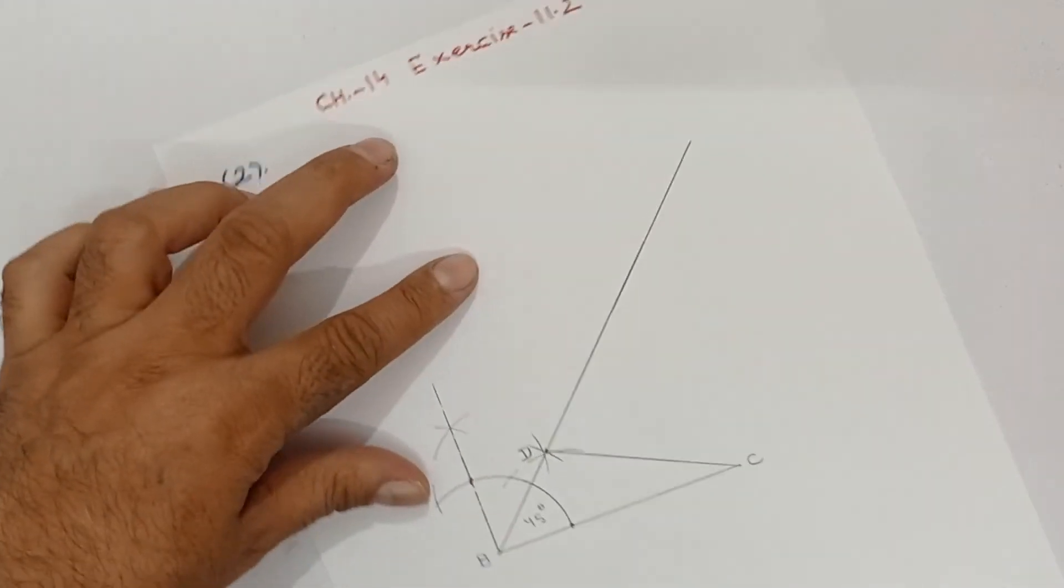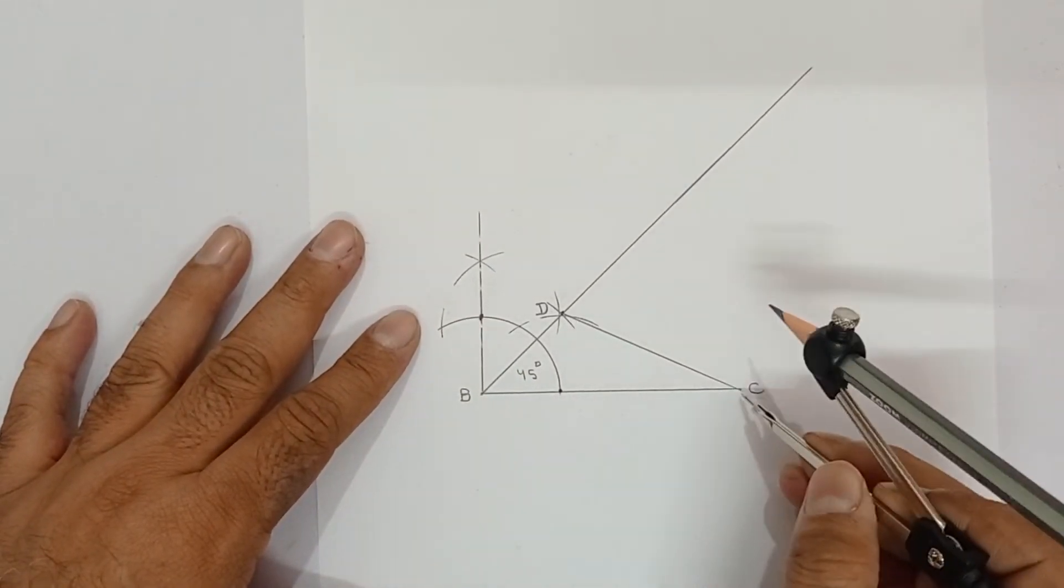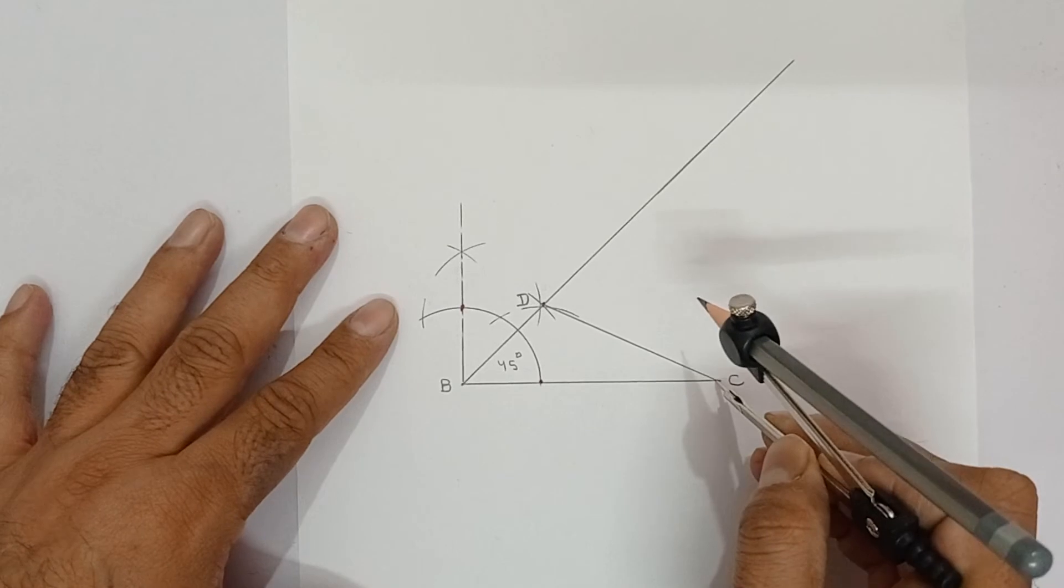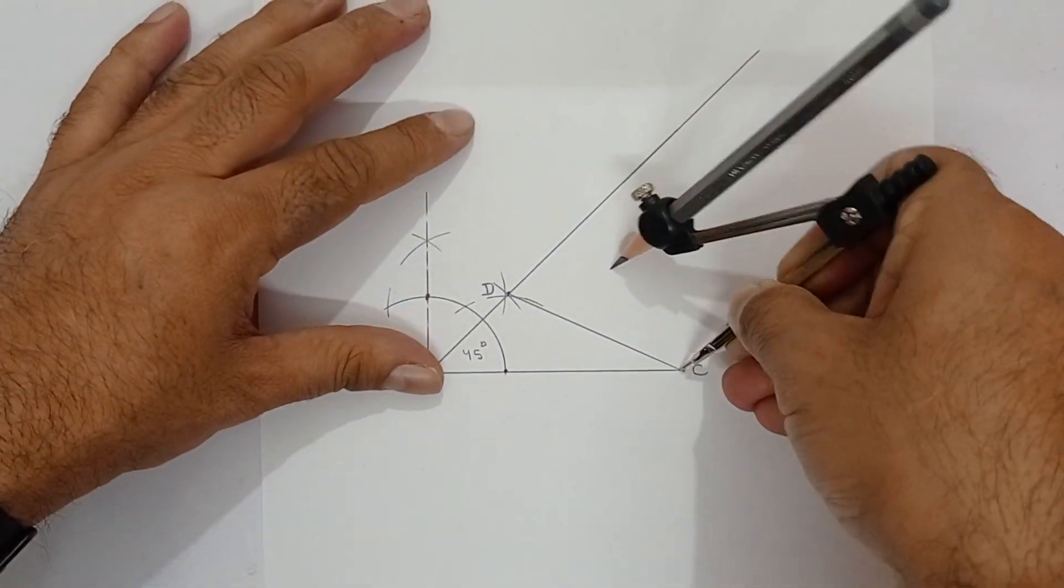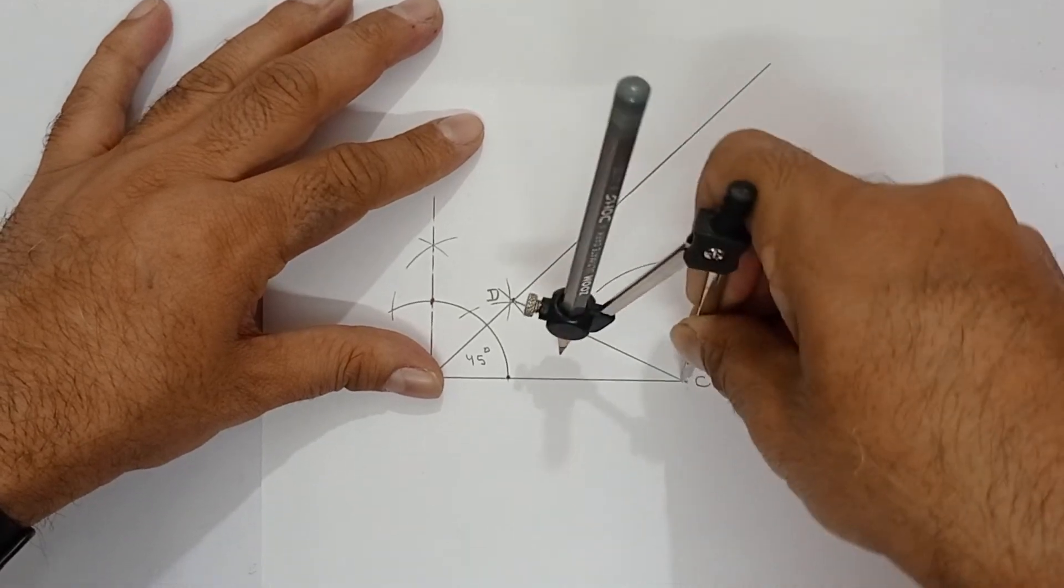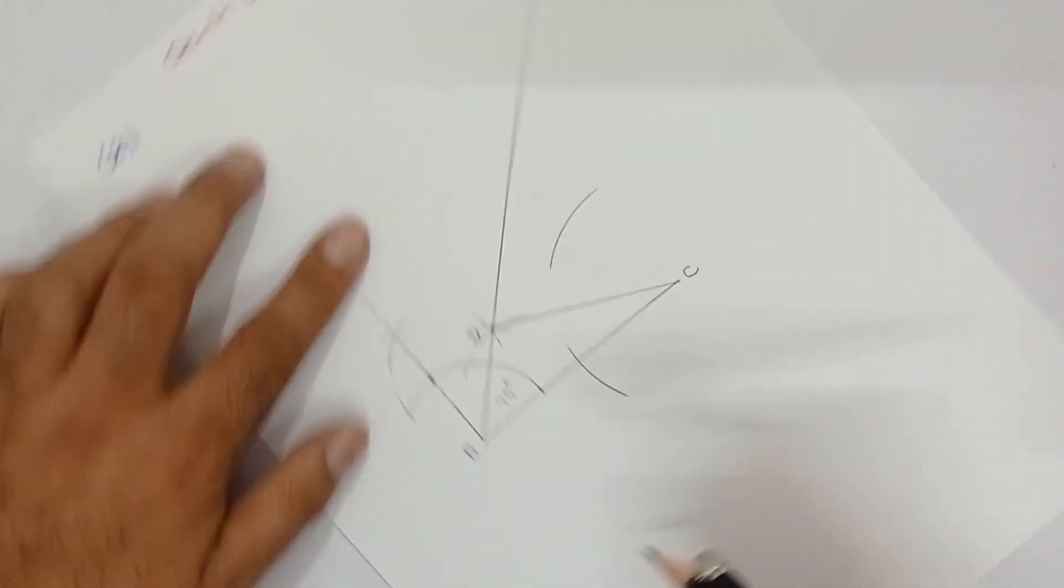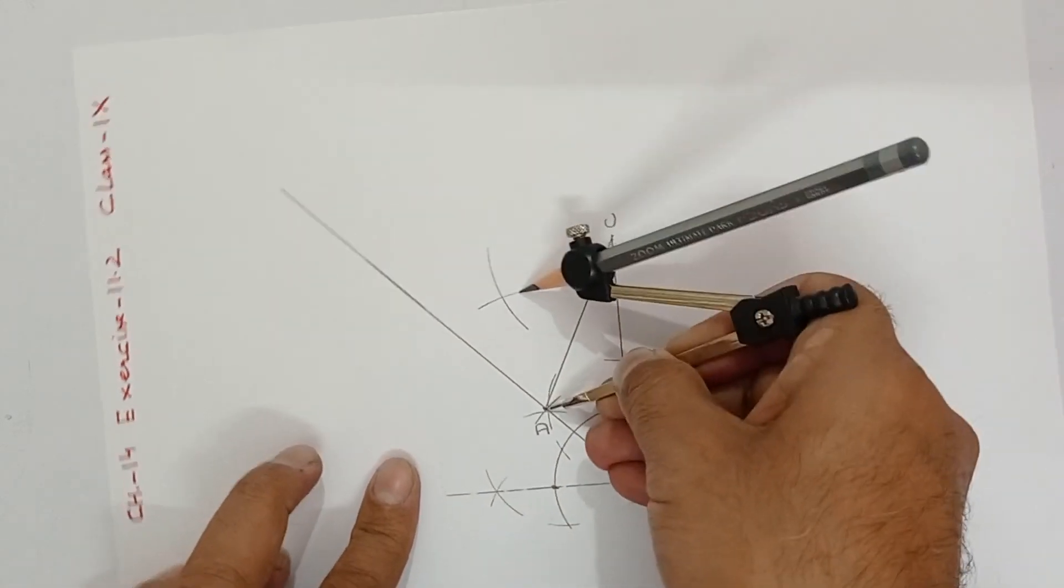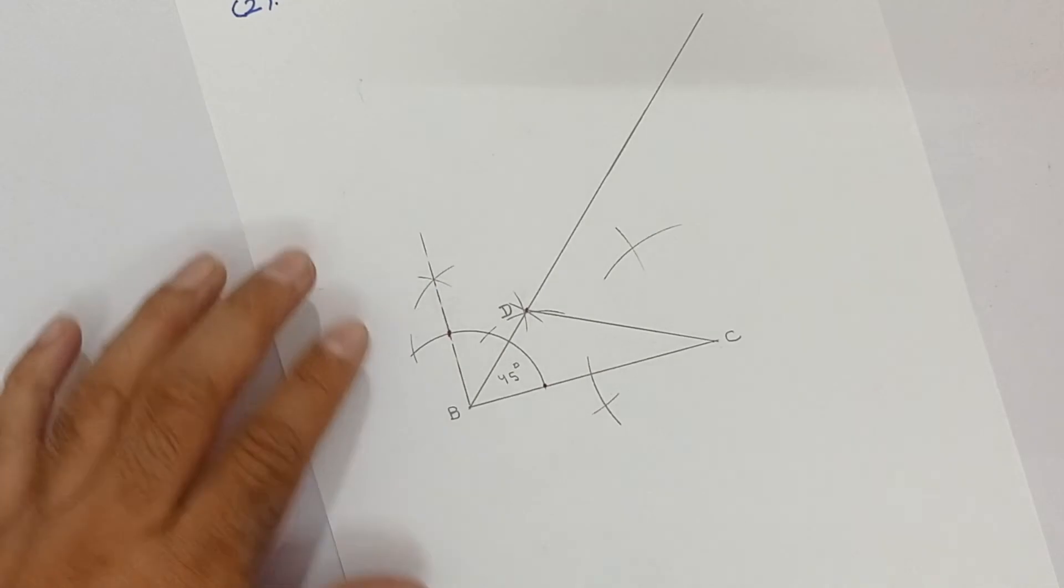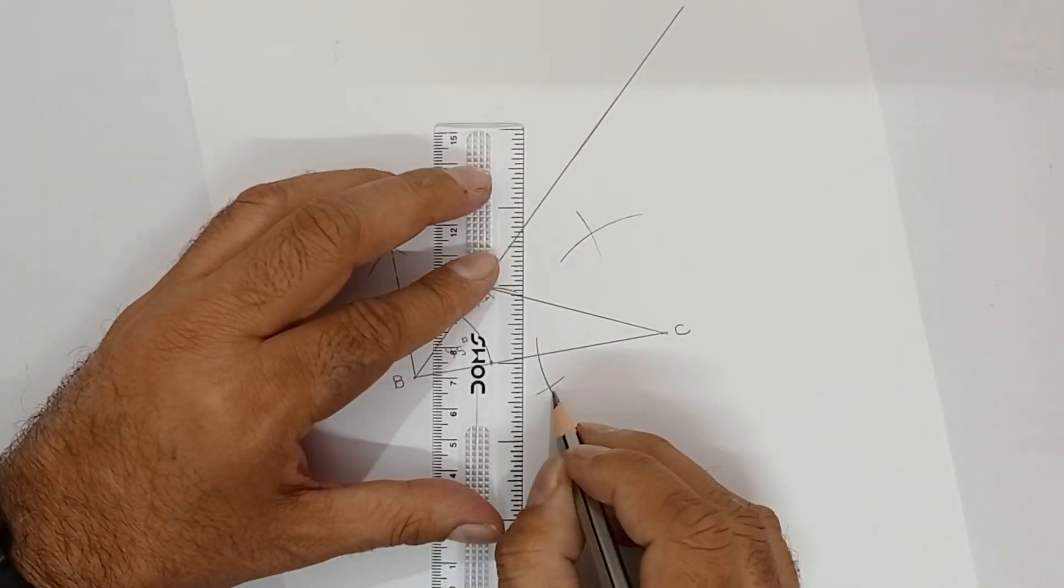Now what do you have to do? D, C has to be bisected. This DC. To bisect, you know how to do. Keep compass at C, opened more than half. One arc above, one arc below. Once keep at D, compass tip. One arc here, one arc here.